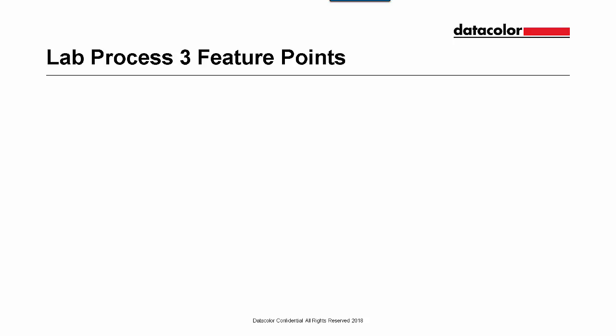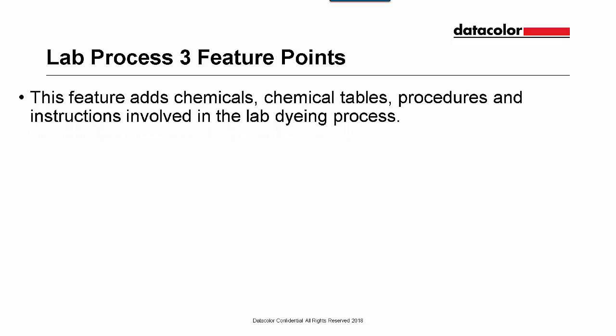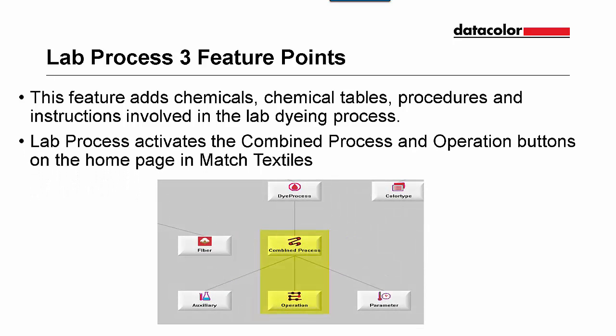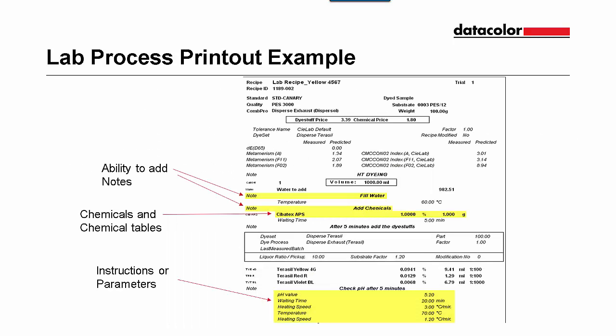The lab process option is worth three feature points. Lab process adds chemicals, chemical tables, procedures, and instructions involved in the lab dyeing process for the recipe printout. Lab process activates combined process and operations to the home page in Match Textiles. Shown below are examples of what is added to the printout in Match Textiles: notes such as fill water and add chemicals, chemicals and chemical tables, and parameters such as pH value and waiting time.